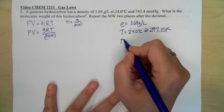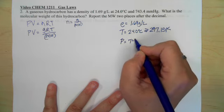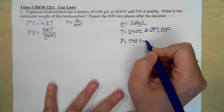Our pressure then is 743.4 millimeters of mercury.